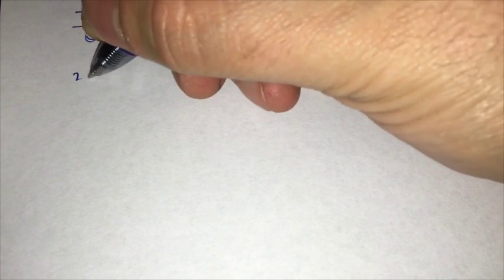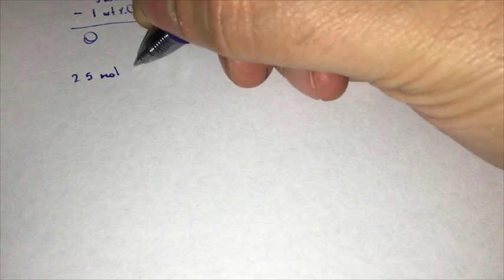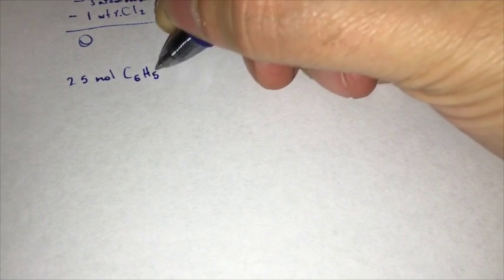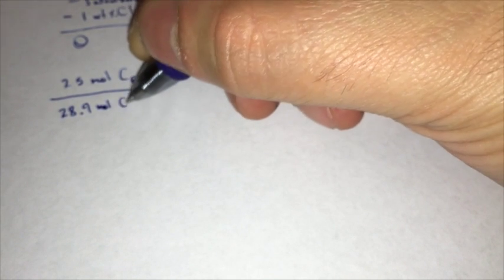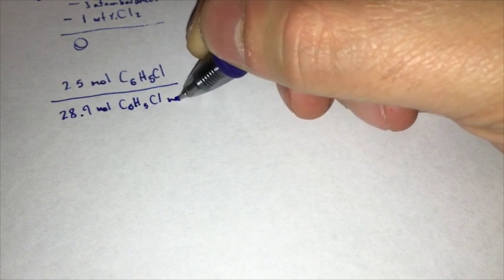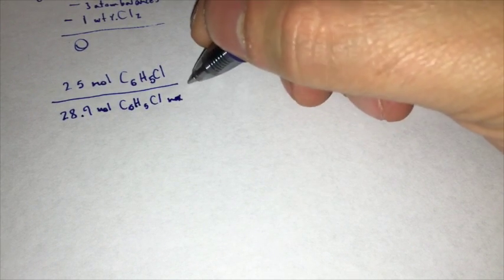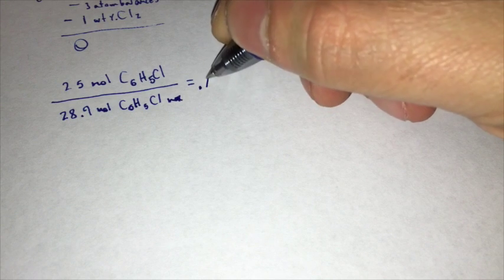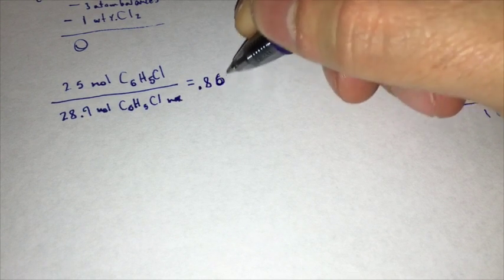And now in order to get the yield, we are going to do 25 moles of C6H5Cl over our 28.9 moles of C6H5Cl maximum, and that will give us 0.865.